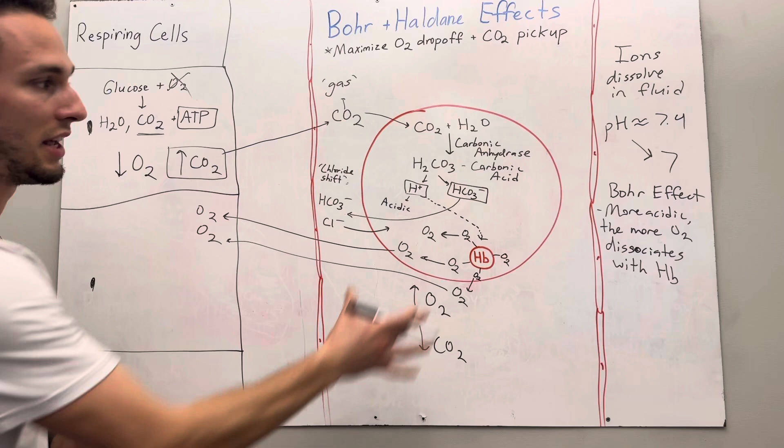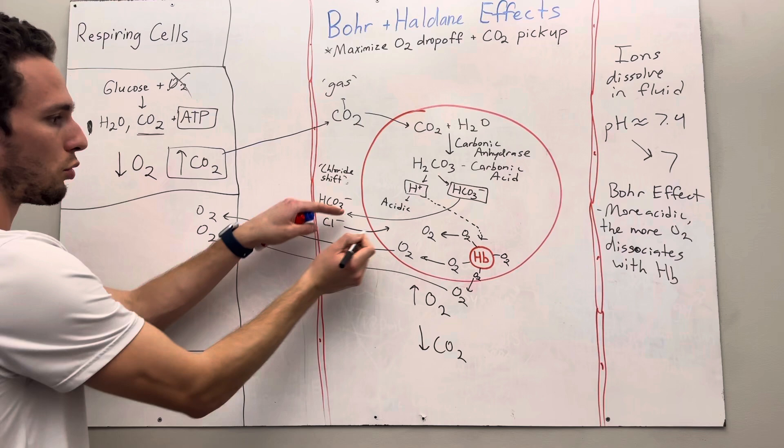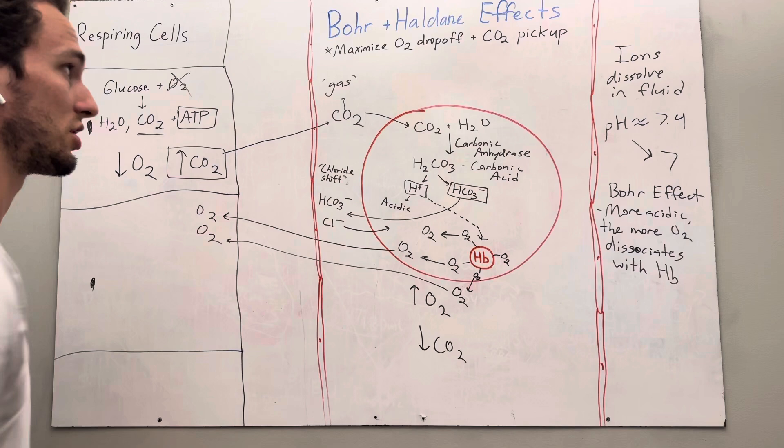This chloride shift exists just to keep the neutrality of the red blood cells. What I mean by that is the cell likes to remain pretty negative, negatively charged. So if we're losing a negative, this cell is going to become more positive. That's dangerous for the cell. It could blow up and do other bad things. So instead of losing a lot of negative, we just bring in a negative instead with chlorine. So that's called the chloride shift. You might get tested on that in a different class.